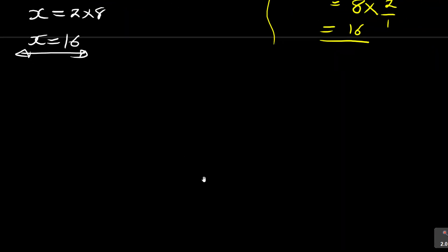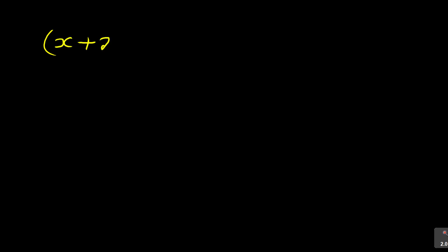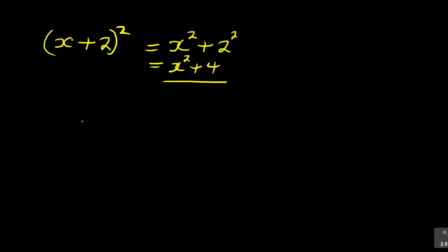The second common error: when students are given (x + 2)², they get confused. What they usually attempt is to say this equals x² + 2² — they distribute the square to each term individually — and get x² + 4. You wonder how they arrive at that, but it's wrong.